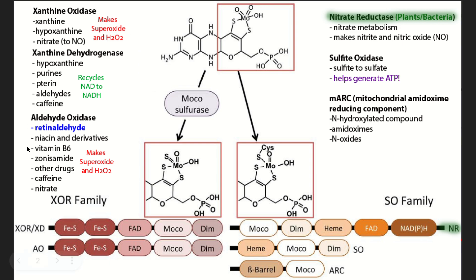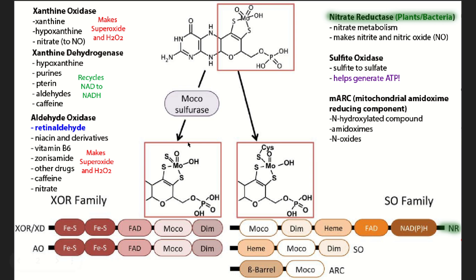All of the enzymes on the left side of this chart require molybdenum cofactor. To be able to use molybdenum cofactor in the XOR family of enzymes, you have to remove a cysteine group with mocosulfurase. This molybdenum cofactor over here has a cysteine added to it, and this one does not. Mocosulfurase removes that. So you can make the XOR family of enzymes, or you can make the enzymes in the sulfite oxidase family.